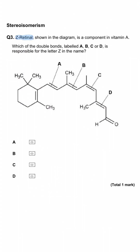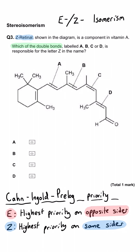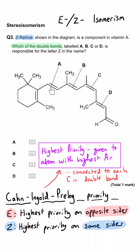Question 3: Z-retinol is a component of vitamin A. Which of the double bonds labelled A, B, C, or D is responsible for the letter Z in the name? E is assigned when the highest priority groups are on opposite sides; Z is when they're on the same side. Looking at double bond A: the highest priority group on the left is the large hydrocarbon chain, and on the right the highest priority points in the opposite direction — so this is E.